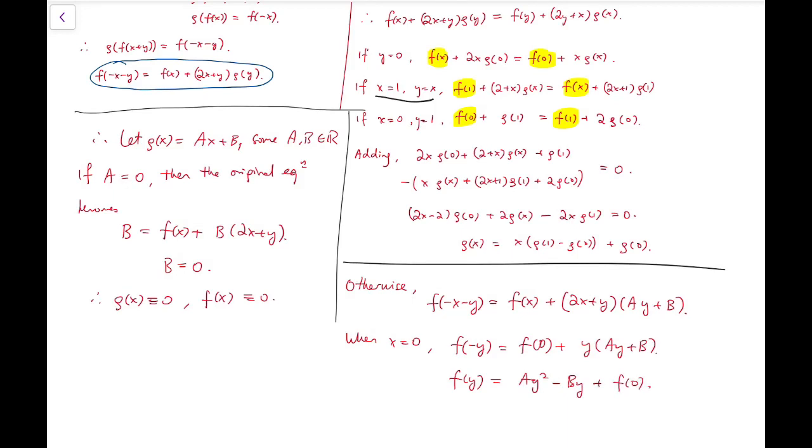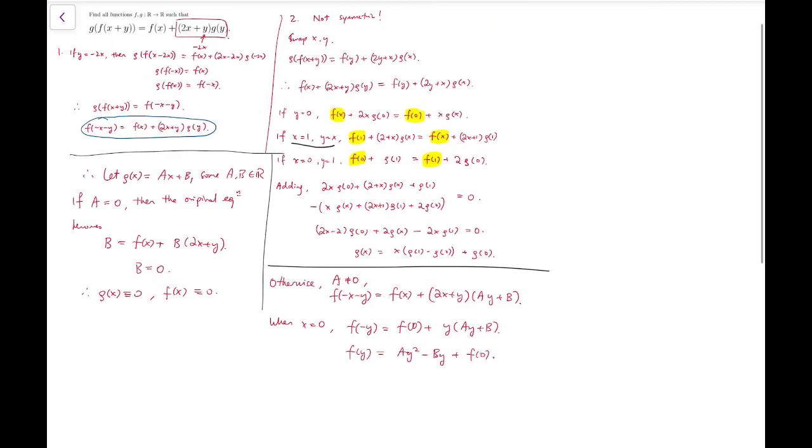f(y) = ay² - by + f(0). So we know that if g is indeed linear, then f must be a quadratic polynomial. In particular, when we know that a is non-zero, the quadratic term is valid.